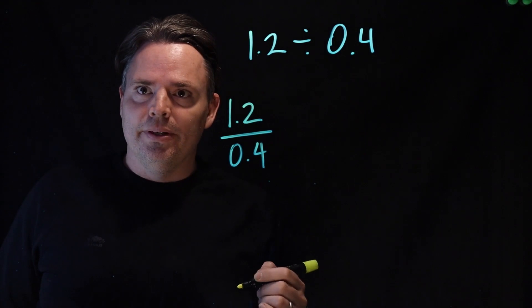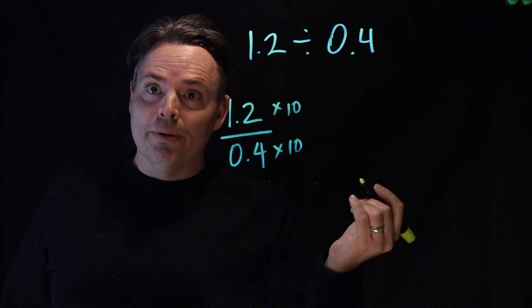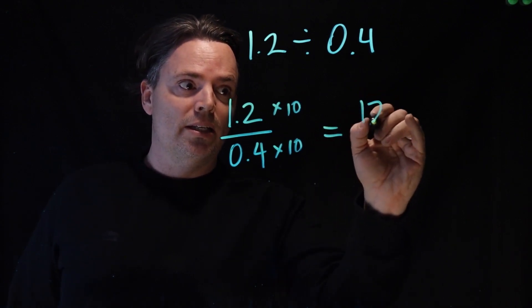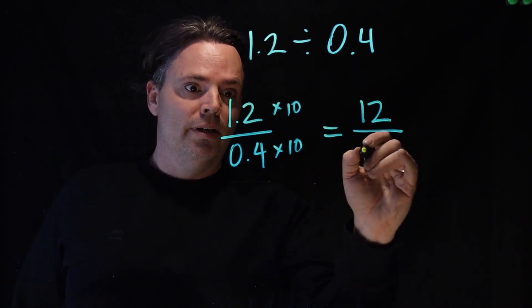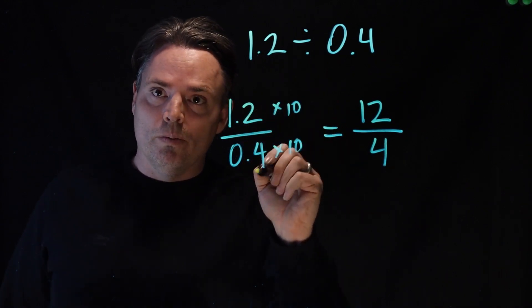Then she said to me, you know, if you actually multiply each of these by 10, you can get rid of the decimal places. So this actually says 12 divided by 4, because when you multiply by 10, you just move the decimal place over once.